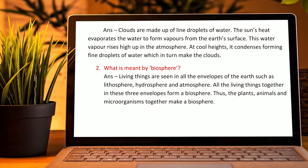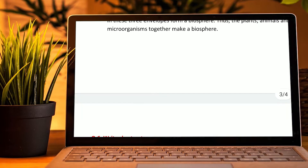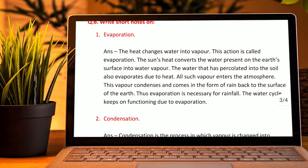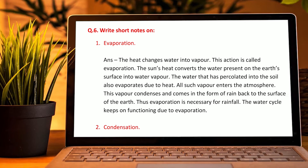What is meant by the biosphere? The living things are seen in all the envelopes of the earth such as the lithosphere, hydrosphere, and atmosphere. All the living things together in these three envelopes form the biosphere. Thus, plants, animals, and microorganisms together make the biosphere.